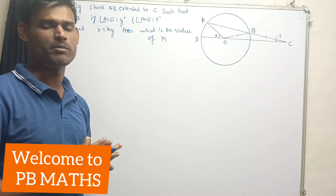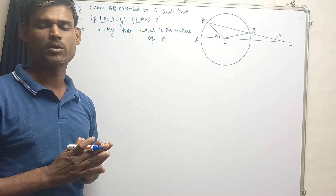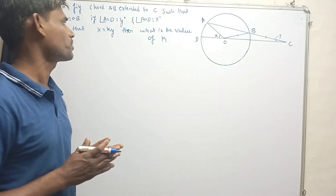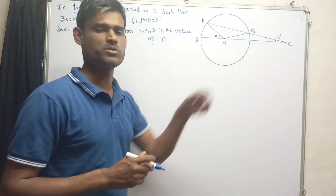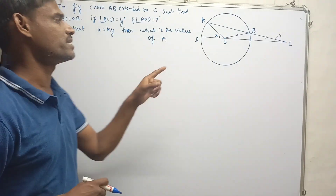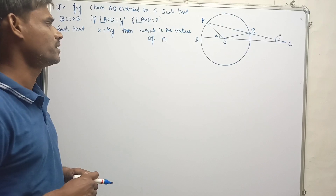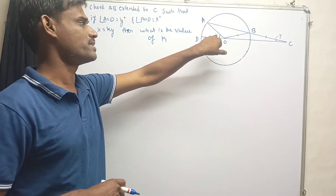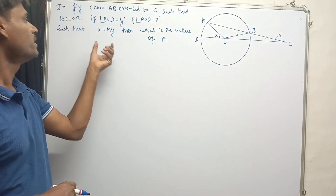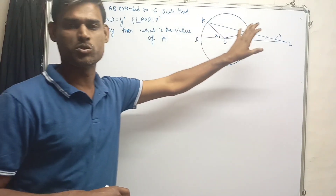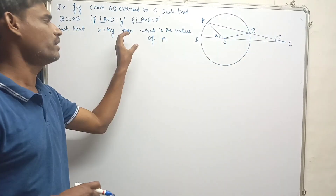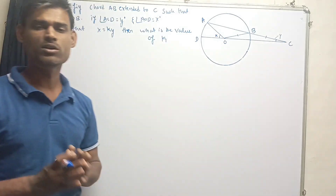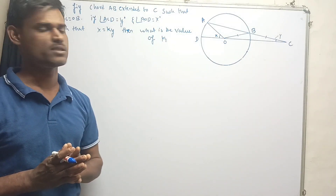Hello everyone, welcome to PV Maths. Today in this video I am going to solve a problem which is from CAT 2003 examination. The question is: in the figure, AB is extended to C such that BC equals OB. If angle ACD equals y degrees and angle AOD equals x degrees, such that x equals k times of y, then what is the value of k?